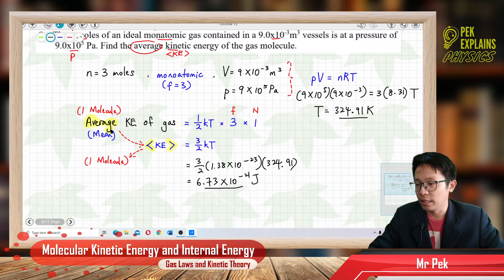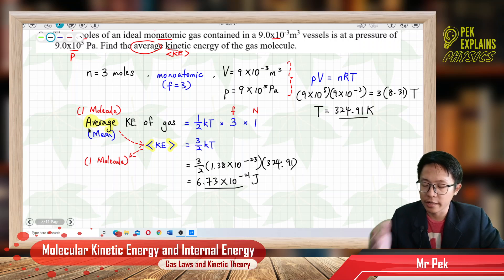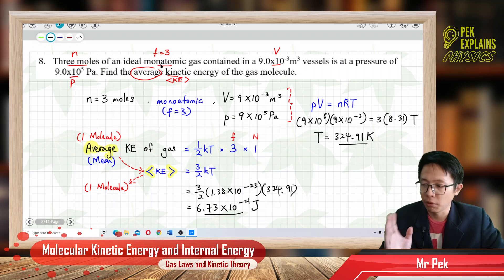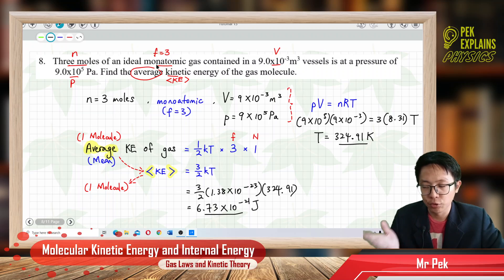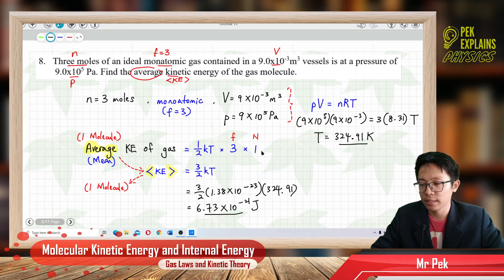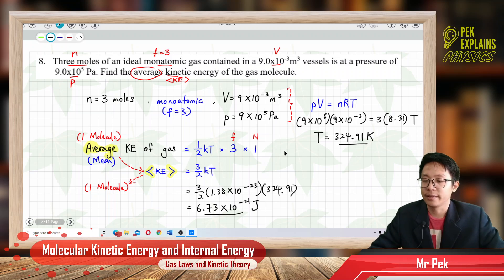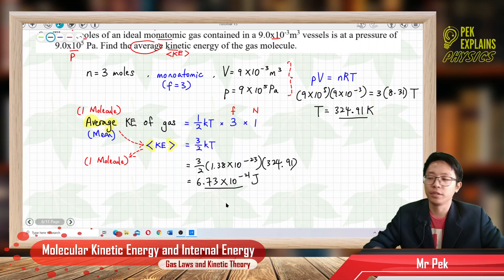So, very simple. For this question, you just identify the word 'average' — average means one molecule. Then see what type of gas: monoatomic, diatomic, or polyatomic. Monoatomic only has 3 degrees of freedom. Then you can use the formula: start with ½KT, multiply by the number of degrees of freedom, multiply by the number of molecules.